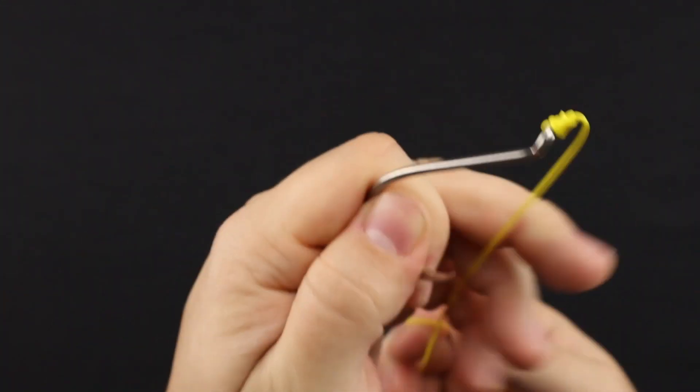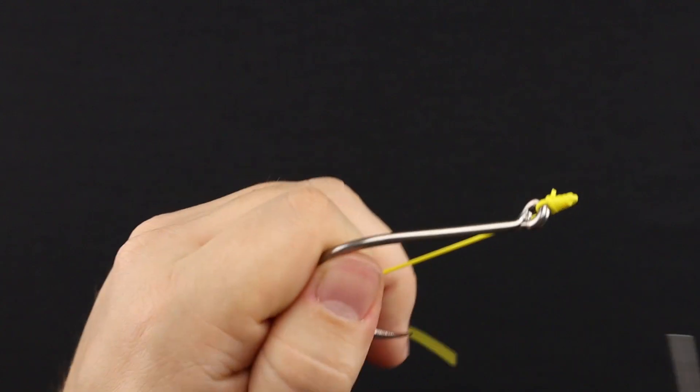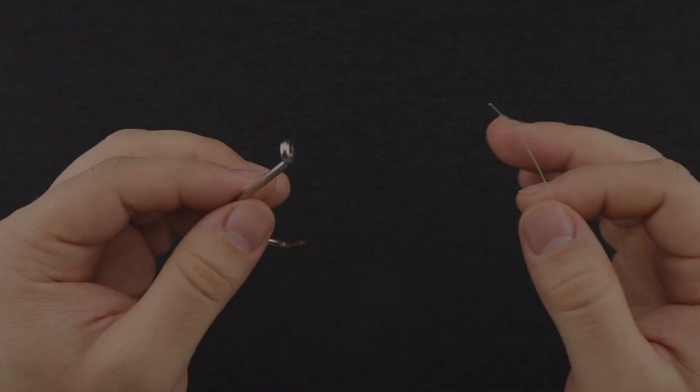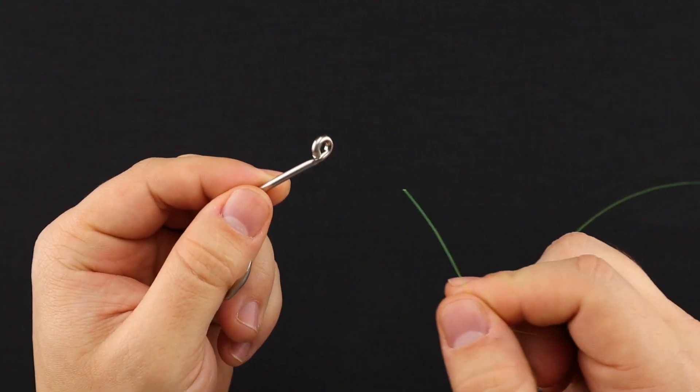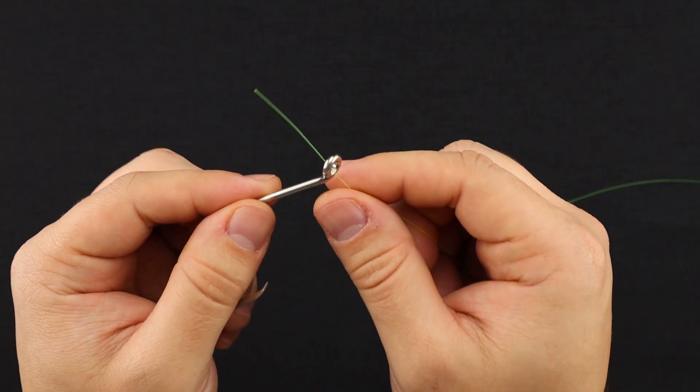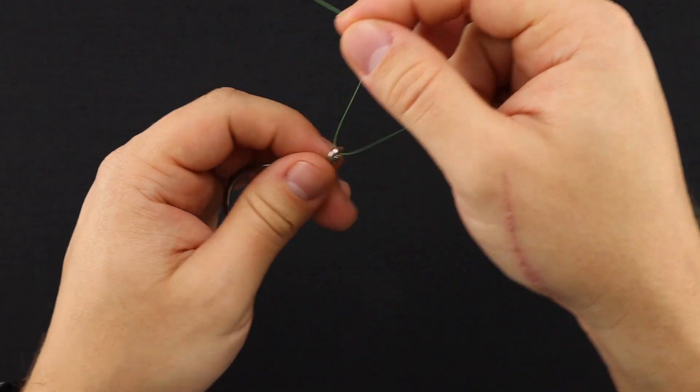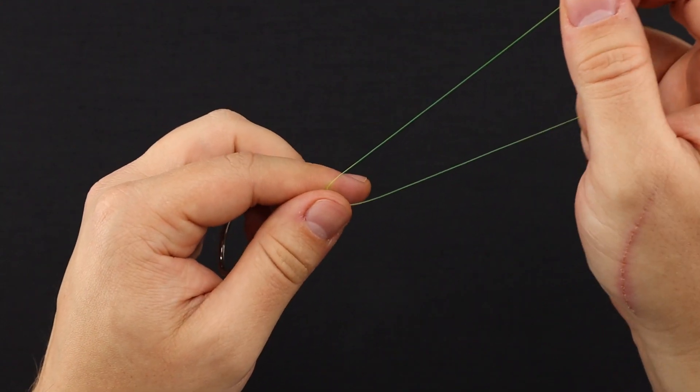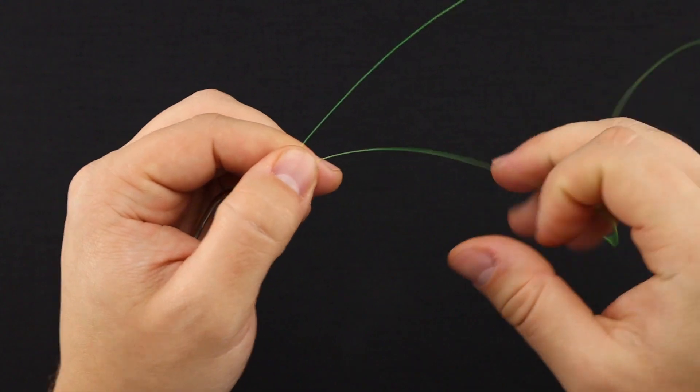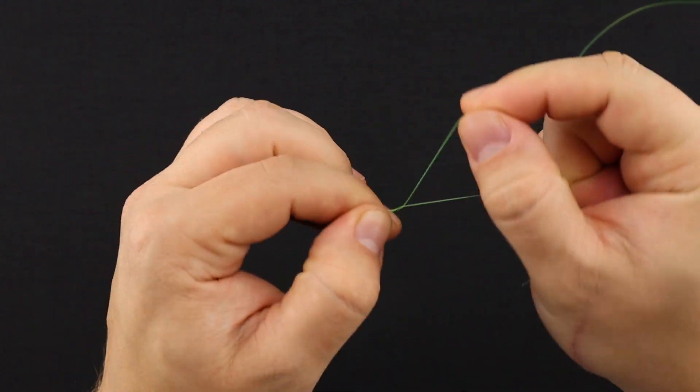Now I'm gonna go ahead and demonstrate with a lighter line. We'll go with the monofilament line here. Alright, so with the monofilament we're gonna do the same process. Place the tag end through the eye of the hook, give yourself about six to eight inches here to work with tag end. We're gonna do eight wraps since it's a little lighter of line.